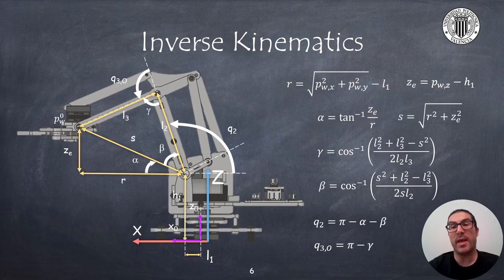Once s is known, then we notice that all sides forming the triangle L2, L3 and s are known and therefore we can use the cosine theorem to provide us the values for the angles beta and gamma. Once these angles are known, computing q2 and q3o are obtained from linear expressions as shown.